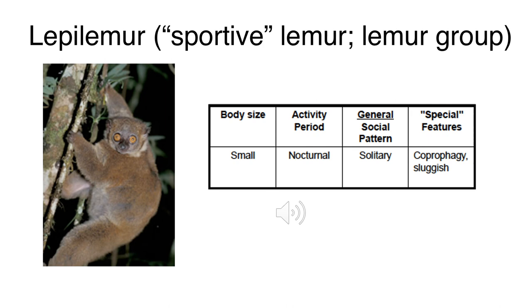Here's an example of our sportive lemur - small, active at night with large eyes. The photo was taken with a flash so you can't see those reflective eyes, but remember lemurs retain the tapetum lucidum. They forage mostly solitary - solitary doesn't mean 100% alone, just very little contact with others, with overlapping foraging ranges. Their sluggishness indicates a low-nutrient diet, and coprophagy means they re-eat their feces.